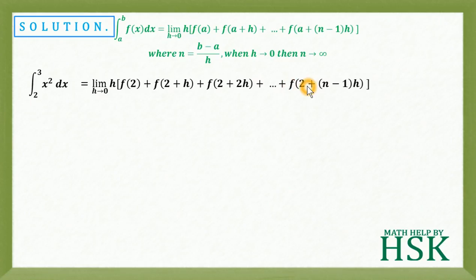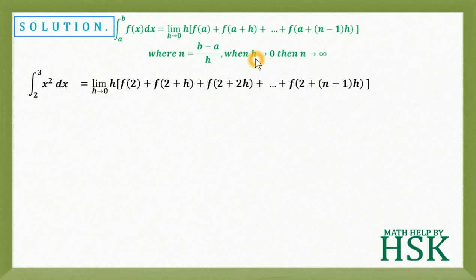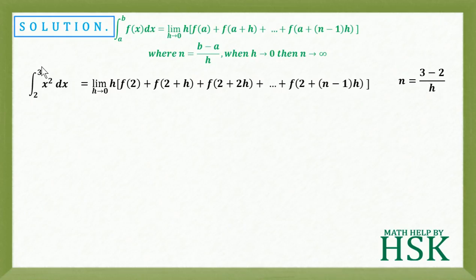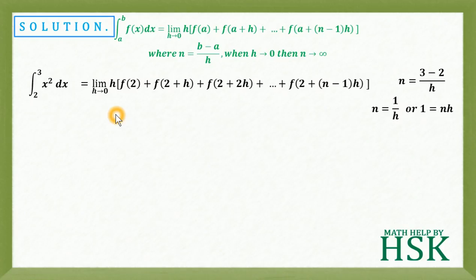This continues up to f of 2 plus n minus 1 into h. Now n is equal to b minus a upon h, and when h tends to 0, n tends to infinity. So n equals 3 minus 2 upon h, because upper limit b equals 3 and lower limit a equals 2. Therefore n equals 1 upon h, or equivalently nh equals 1.